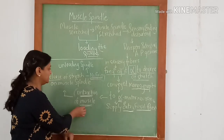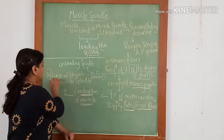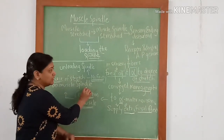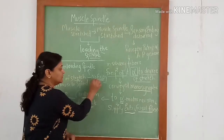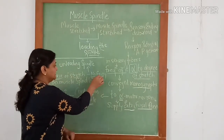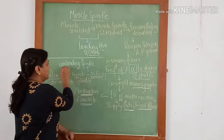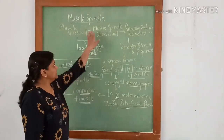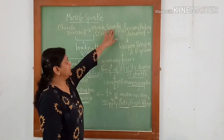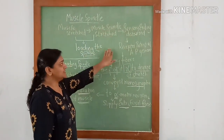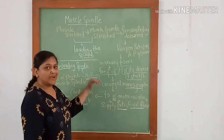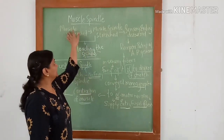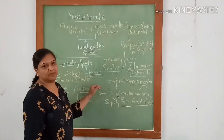Thus it releases the stretch on muscle spindle, so nerve firing ceases and this is unloading of spindle. Thus the muscle spindle and its reflex connection maintain the length of the muscle by feedback mechanism.